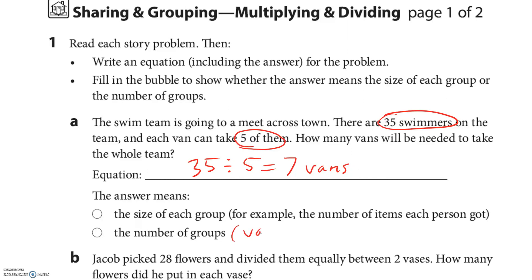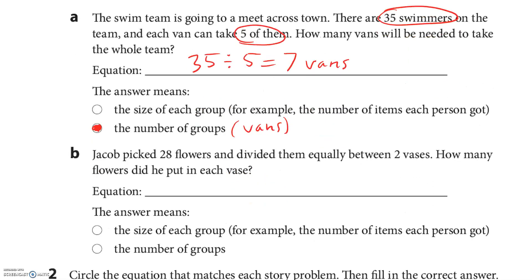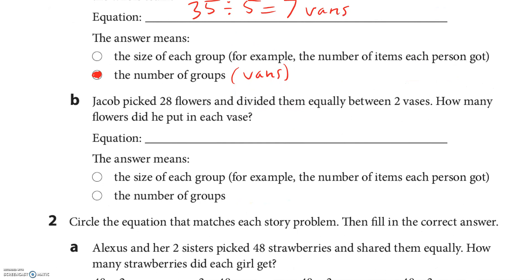Next one: Jacob picked 28 flowers and divided them equally between two vases. How many flowers did he put in each vase? So 28 flowers divided by two vases means there are 14 flowers in a vase. They told us there's two vases, that's the number of groups, so the answer is the size of each group.